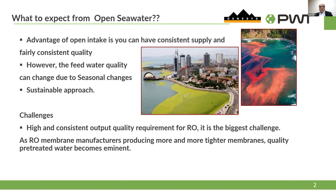As RO manufacturers are producing more and more tighter membranes — for instance, in the late 90s and early 2000s, membrane surface area was about 300 square feet, but now we have membranes at 440 square feet. Thanks to automatic winding machines and consistent glue lining, we can increase the active surface of the RO membrane. But on the other side, with tighter membranes, you need even better pretreatment.